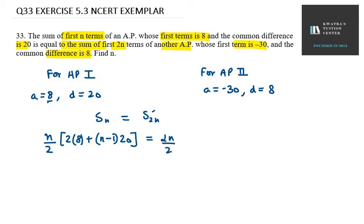2n over 2. In bracket, 2 times a, a for the second AP is minus 30, plus 2n minus 1 times d, d value is 8.